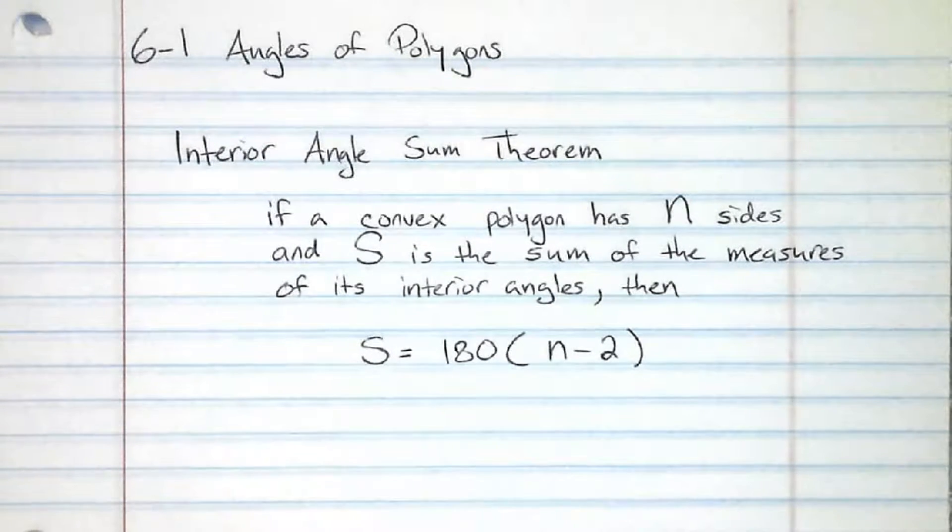This comes from the interior angle theorem, which basically says if you have a convex polygon that has n sides, we use S to represent the sum of the measure of its interior angles.